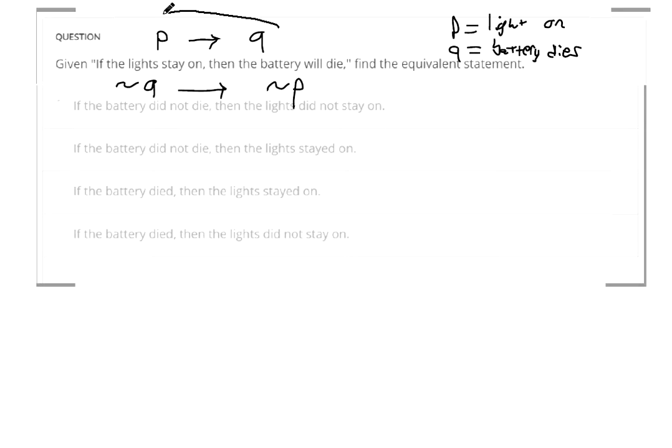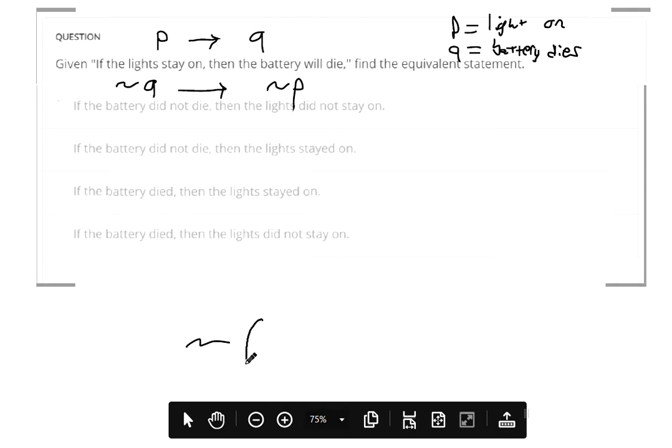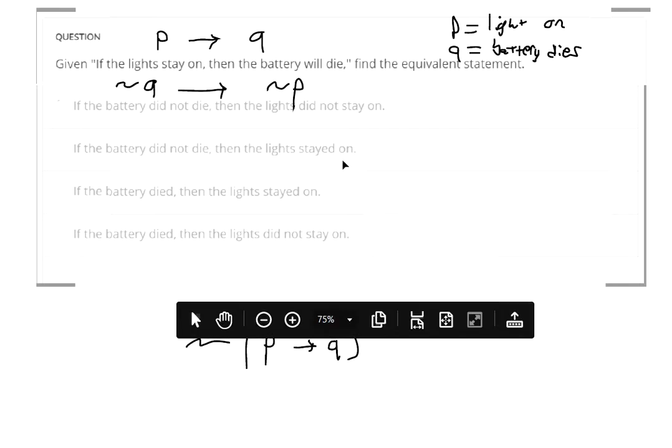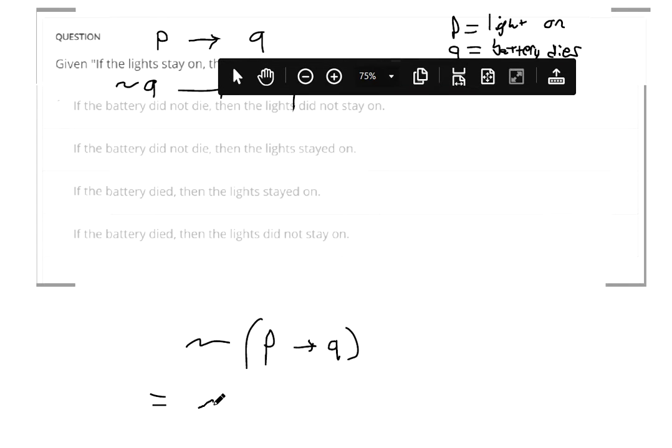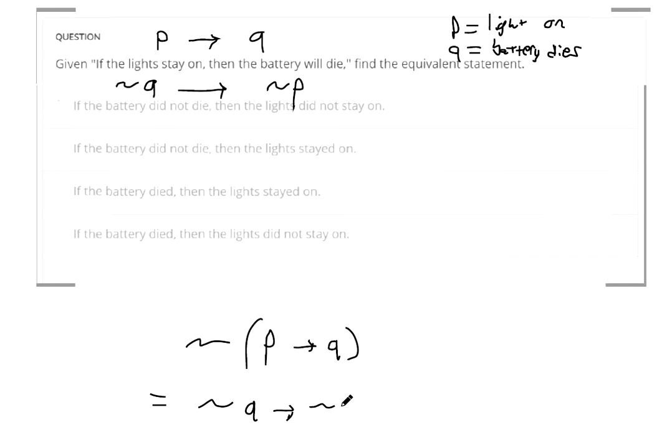So one thing we can do when we're rewriting conditional statements is, if you negate the entire thing, P leads to Q, that's going to be the same thing as the negation of Q implying the negation of P.